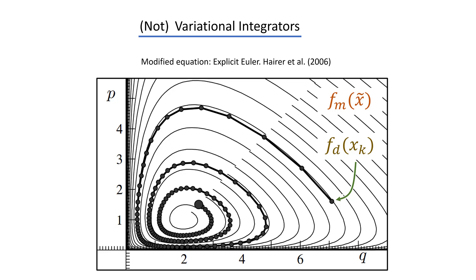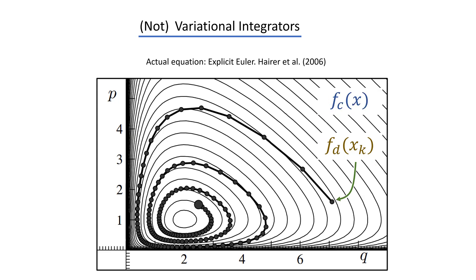Now, to go over another example, here you see the explicit Euler method with the modified equation as a solid line spiraling outwards, and the discrete approximation, of course, closely tracking it. But the problem is that the actual system is periodic. So, in a sense, our actual system could be energy conserving, but the modified equation, and therefore the discrete approximation, are not.